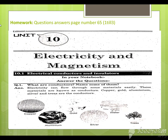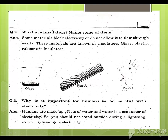For homework, Unit number 10, page number 65. Question 1: What are conductors? Name some of them. Electricity can flow through some materials easily — these materials are known as conductors. Copper, gold, aluminum, silver, and iron are conductors.